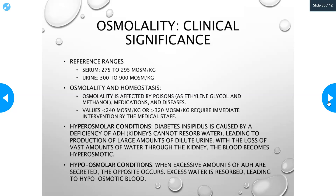A typical hyperosmolar condition is diabetes insipidus, caused by a deficiency of antidiuretic hormone — usually from a blow to the head or damage to the pituitary gland. This causes the kidneys to not be able to resorb water from urine back into the cardiovascular system, leading to production of large amounts of dilute urine while the blood becomes too concentrated. It becomes hyperosmotic and patients are thirsty all the time. They drink constantly and produce lots of very dilute urine, but the blood never becomes appropriately diluted.